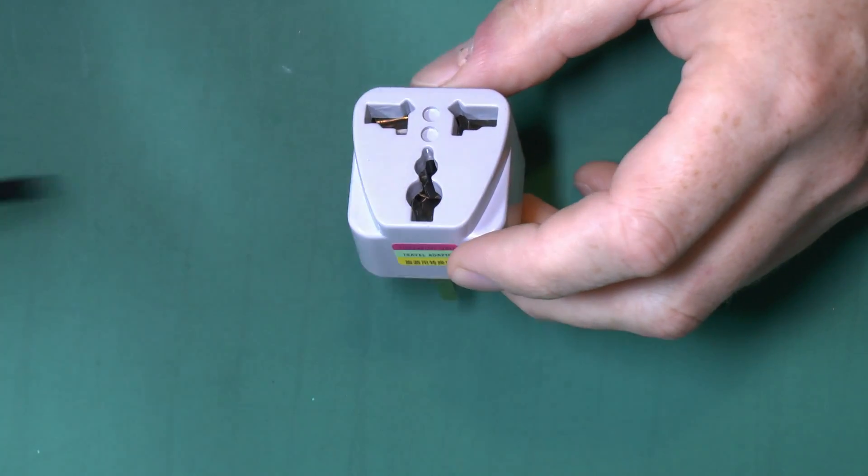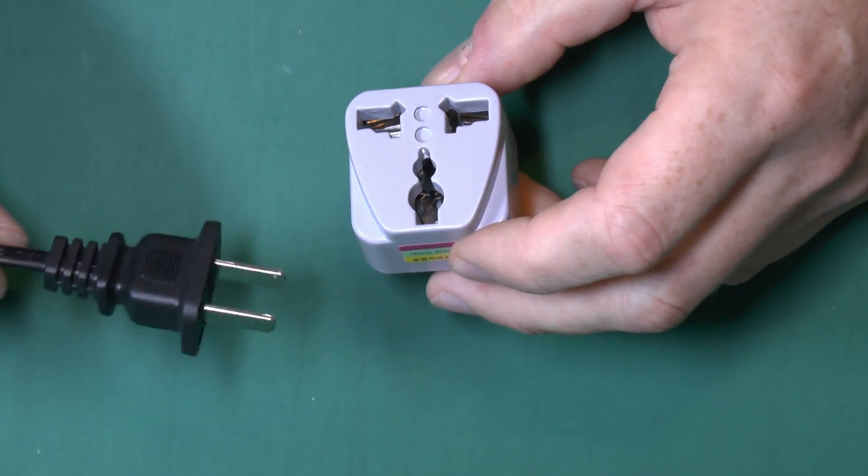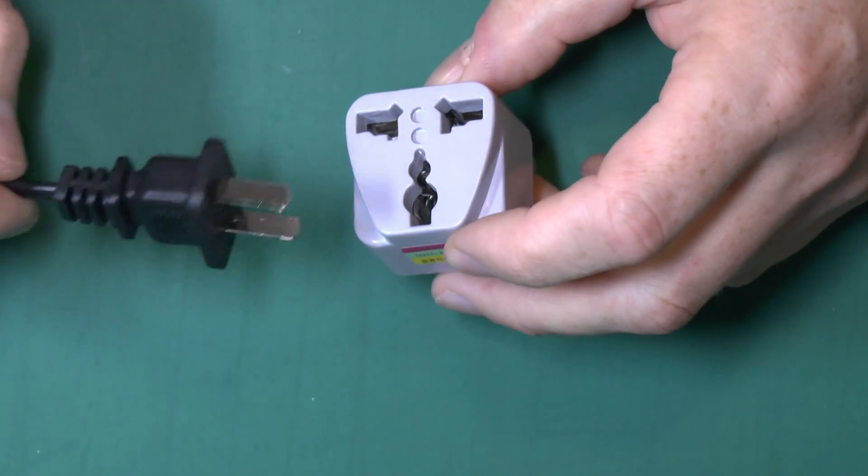This obviously has no earth because this was a double-insulated or Class 2 appliance, so it didn't actually need an earth wire, which is a good job because there's no way you can actually connect one with a 2-pin plug.